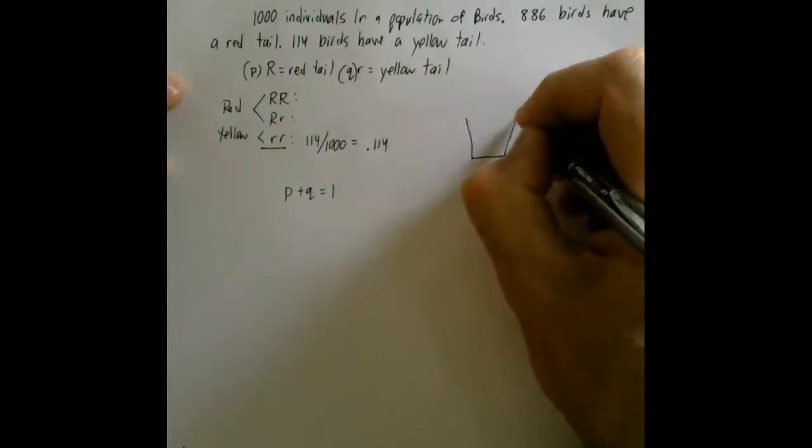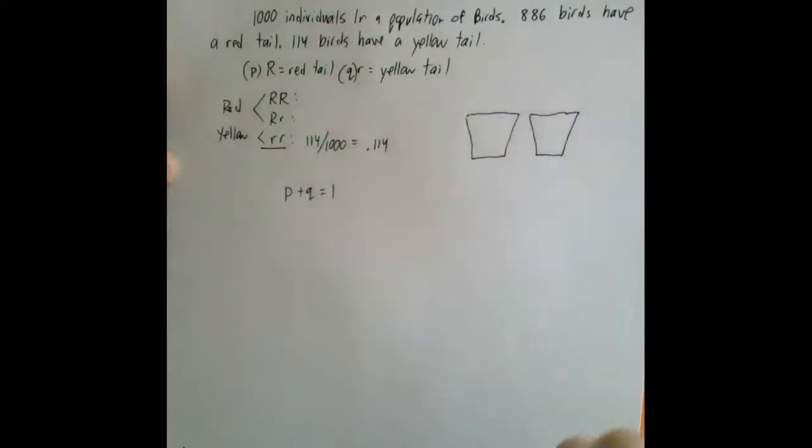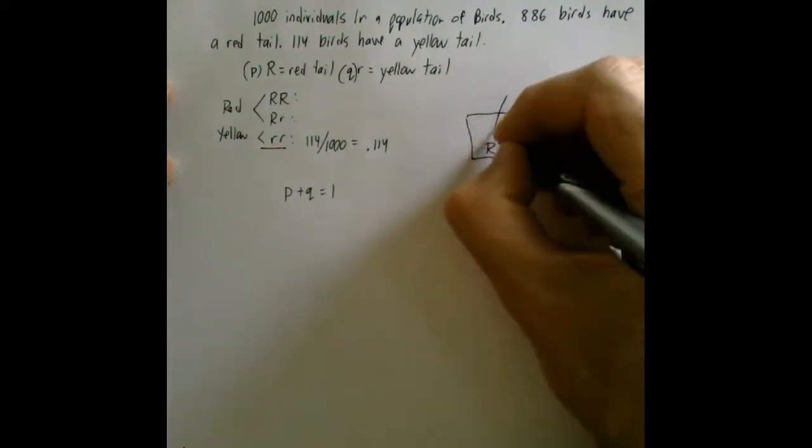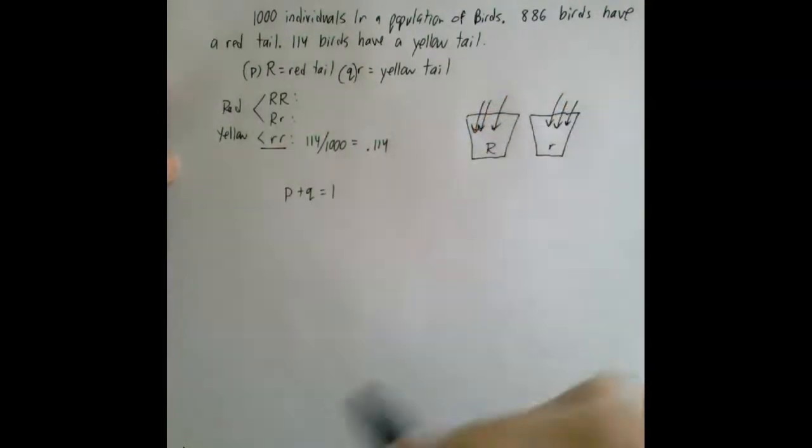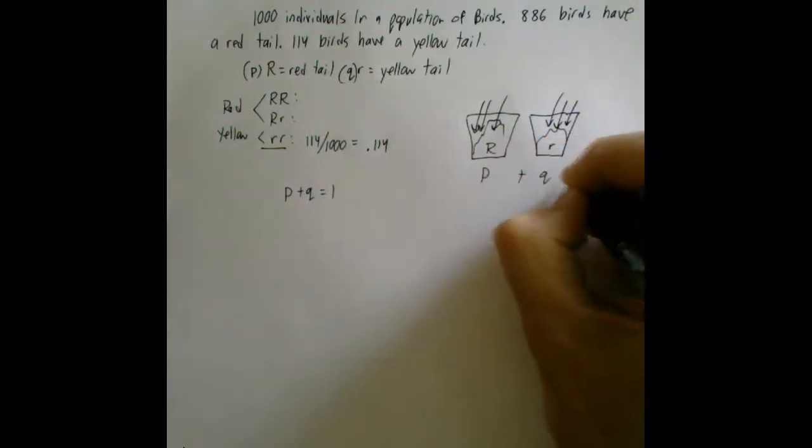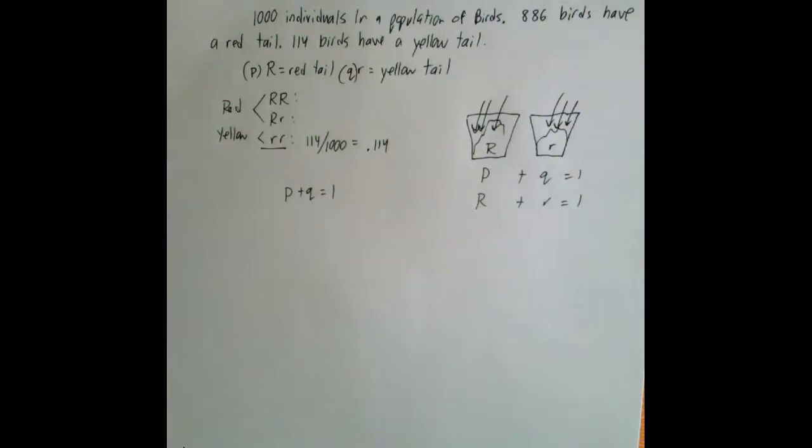You're going to go to all your birds and their genes and say, put all your big Rs in this pile and all your little rs in this pile. If an organism is yellow, it's going to put both its little rs in here. If an organism is heterozygous, it's going to put one big R in here and one little r in here. If an organism is homozygous dominant, it's going to put both big Rs in here. This pile is going to build up. That's what the alleles are - the big Rs and little rs. Some organisms have little ones, some have big ones, some have both. P + Q equals 100% of the population, just like big R plus little r equals 100% of the population. That's just the individual letter.